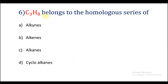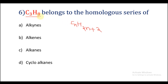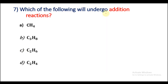Question number 6: C3H8 belongs to the homologous series of — alkynes, alkenes, alkanes, or cycloalkanes? As all members of a homologous series can be represented by the same general formula, C3H8 fits the general formula CnH2n+2, which is the general formula for alkanes. That is why C3H8 belongs to the homologous series of alkanes. So option C is the right answer.